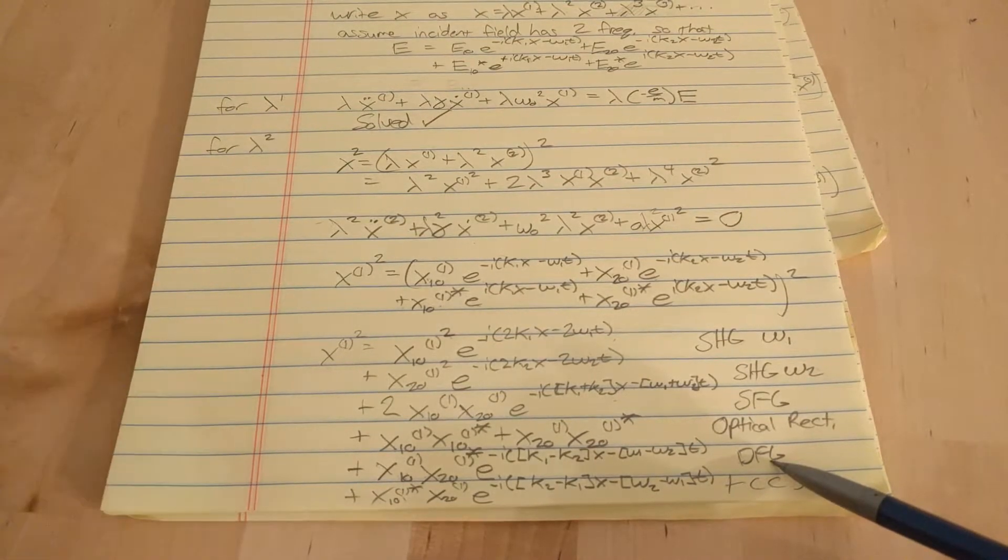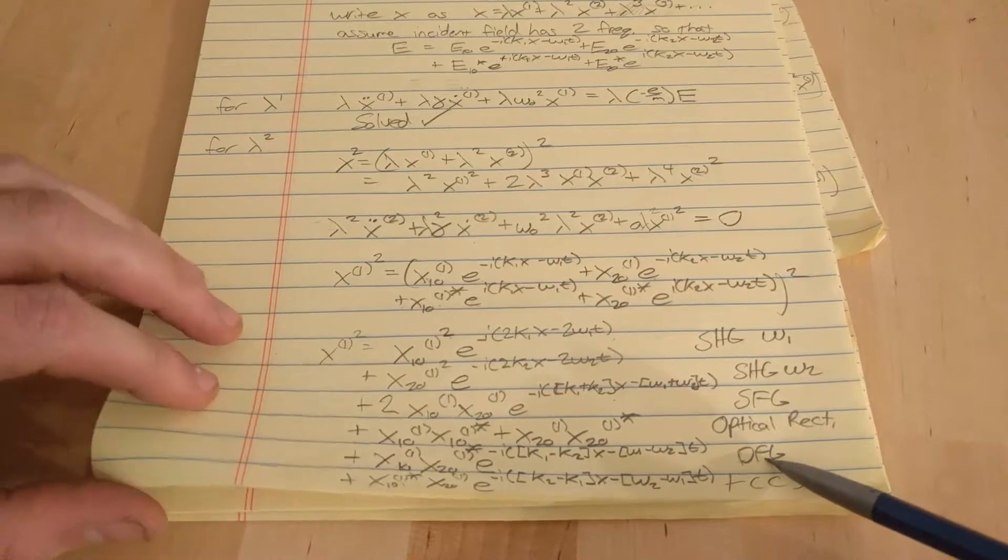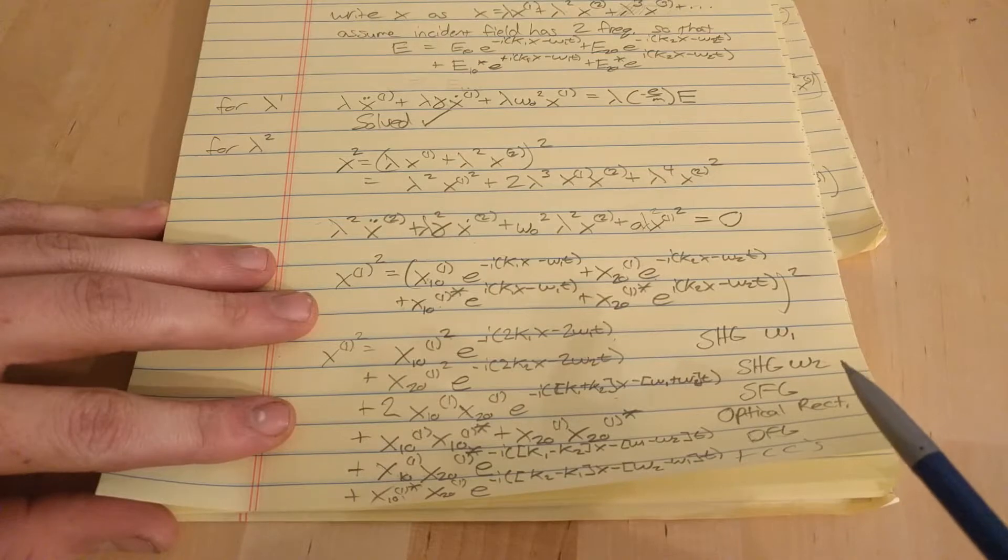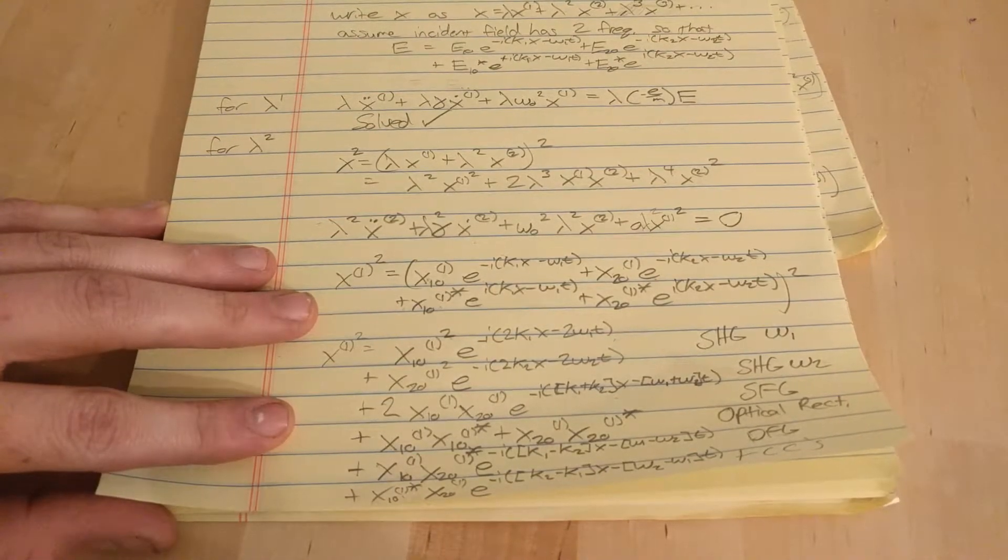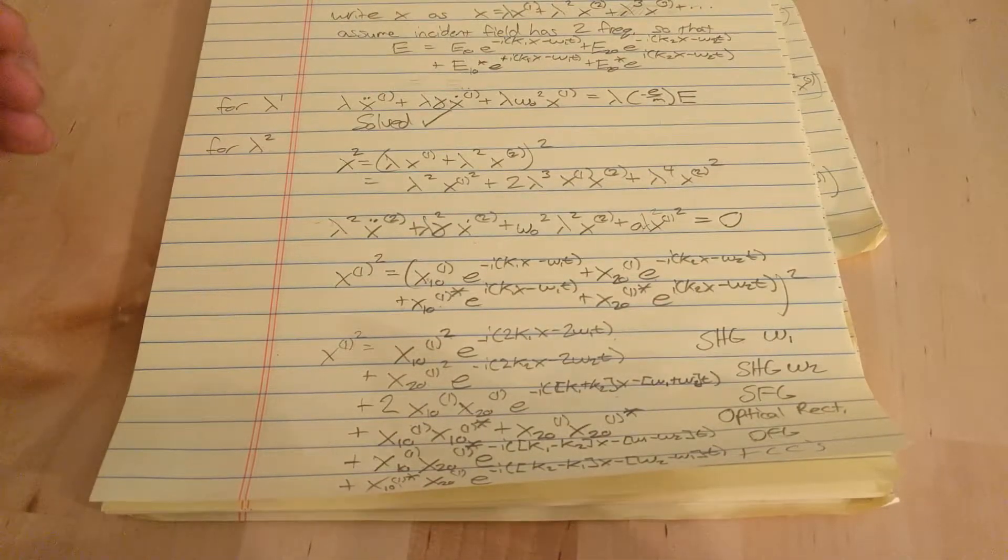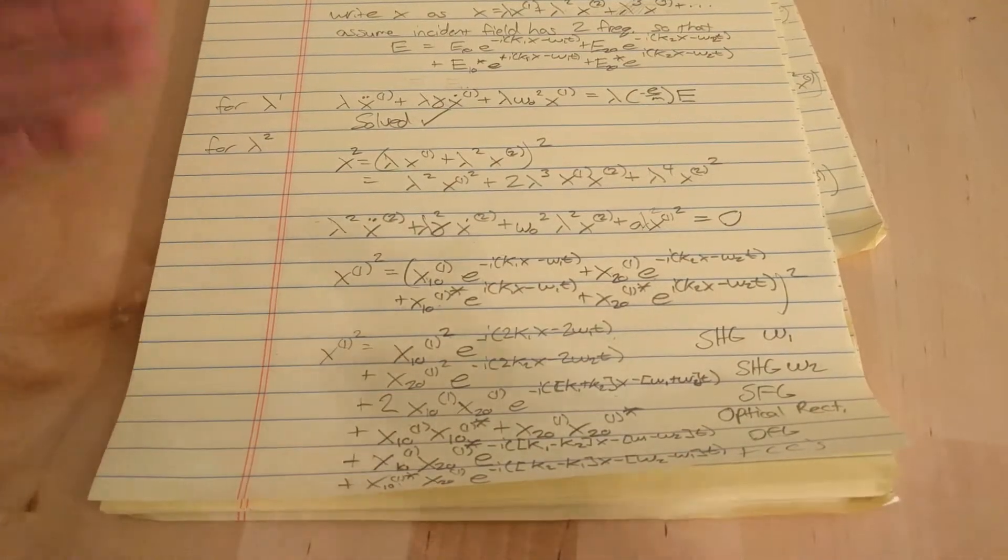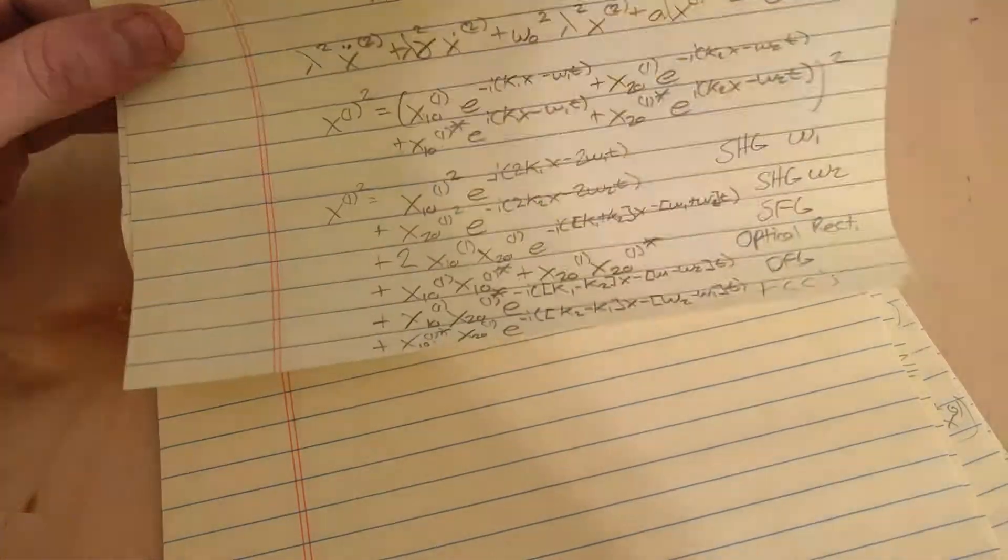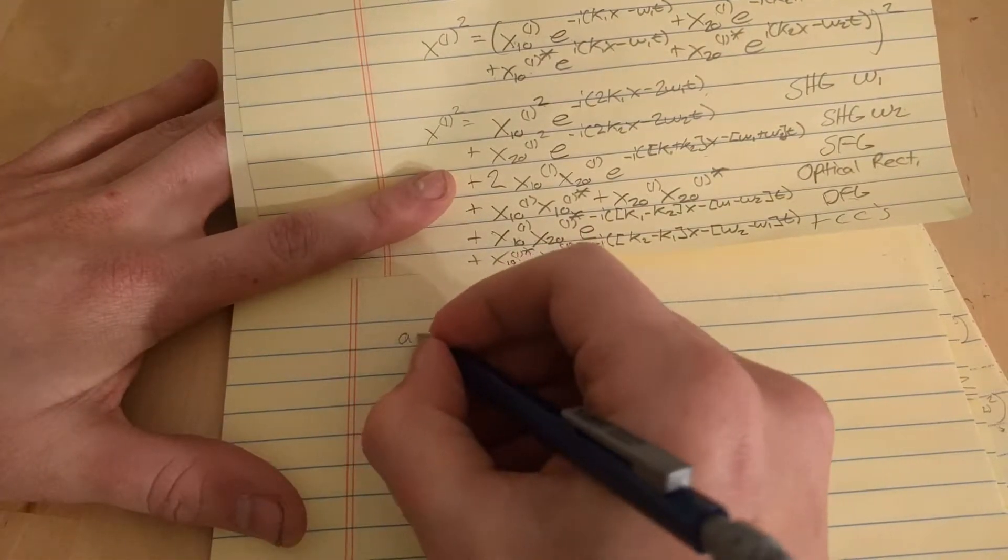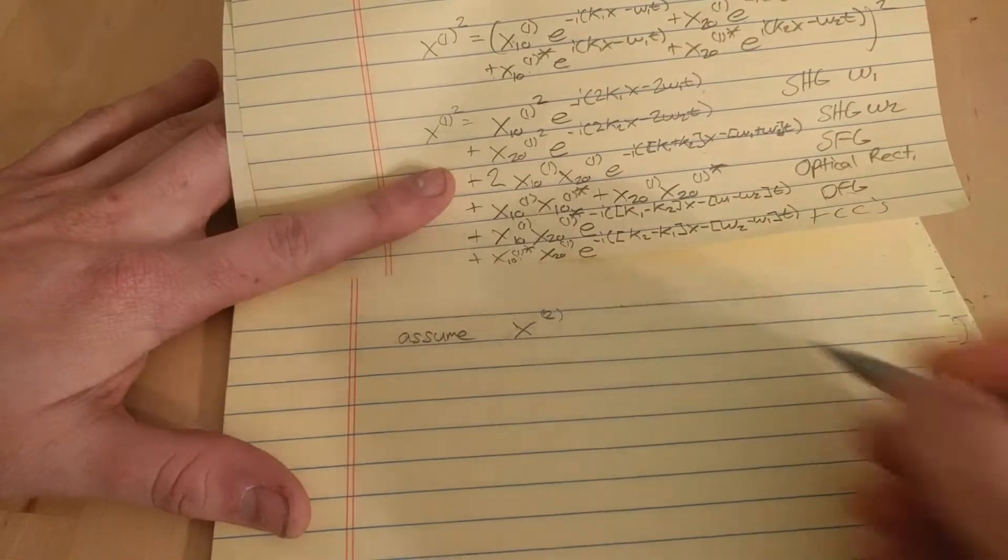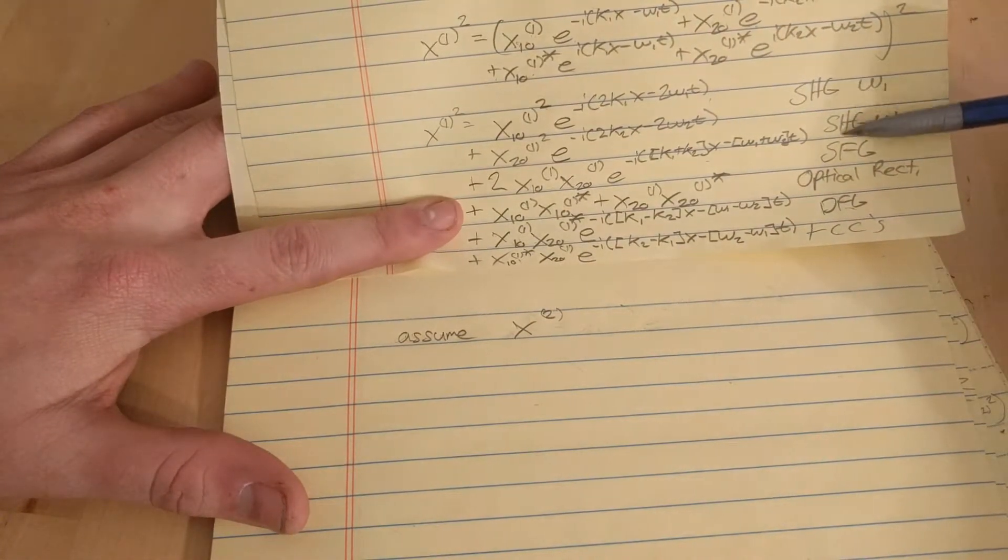Now we're going to do a similar thing to what we did in the last video. We're going to assume a form for X2, and then we're going to use the fact which I called theorem 1 in the last video—that the coefficients in front of some variable, if they're on the left and right side of the equation, they have to be equal. Sorry, I don't know a name for that fact, but I called it theorem 1. So we're going to have to assume X2 has a form.